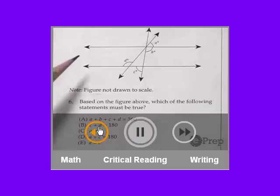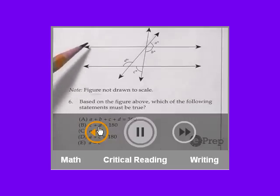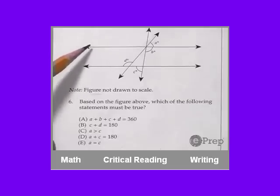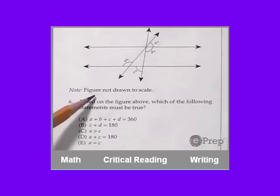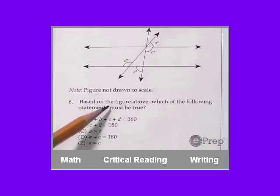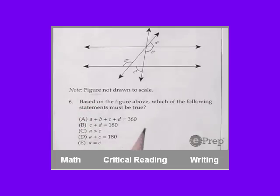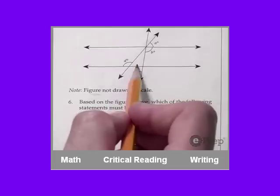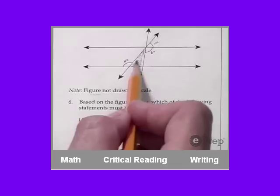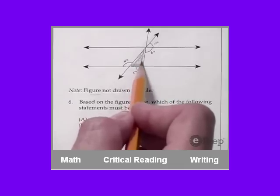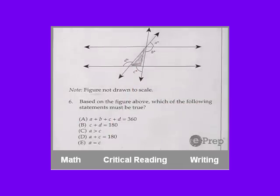What I just want to point out real quick is it says figure not drawn to scale. So that means even though these two lines here look parallel, don't assume that they are parallel. What I focus on right now is what looks like a triangle in here. I'm just going to highlight that for you right here. This is the triangle that I'm looking at.